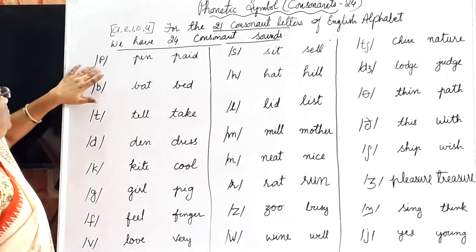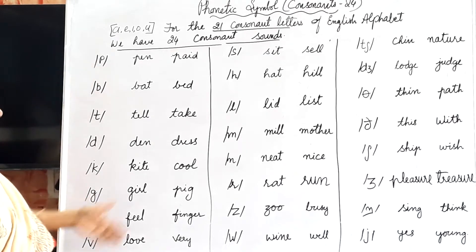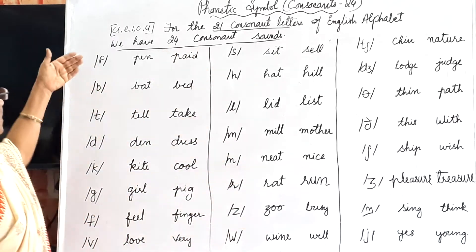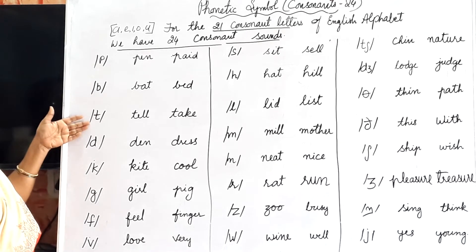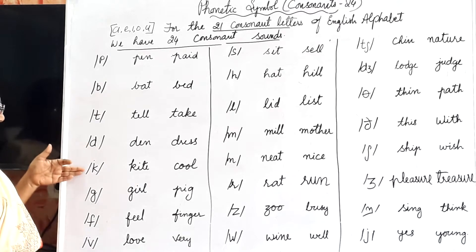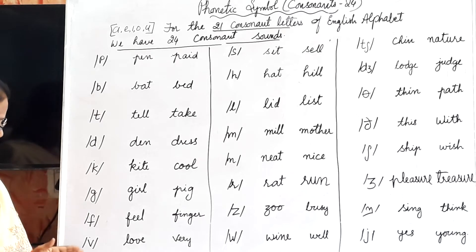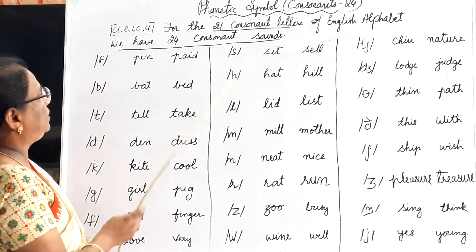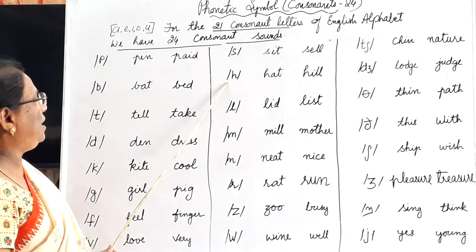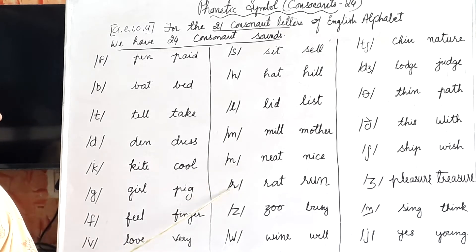This is P — it has the /p/ sound. Let me read all the sounds first: P gives /p/, B gives /b/, T gives /t/, D gives /d/, K gives /k/, G gives /g/, F gives /f/, W gives /w/, S gives /s/, H gives /h/, L gives /l/, M gives /m/, N gives /n/.